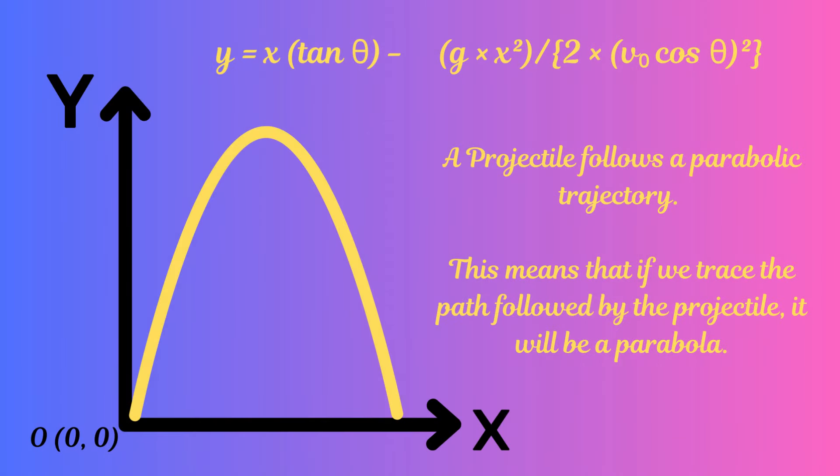Next, we will find the trajectory of the projectile — the path traced during its motion. To find the trajectory, we eliminate the time component from our equations for both the x and y components. With a little algebraic manipulation, we derive a relationship between the vertical and horizontal distances. After solving and eliminating t, we get the trajectory as y expressed in terms of x and x squared. Please see the screen to take note of the exact expression.